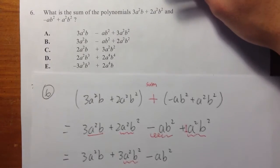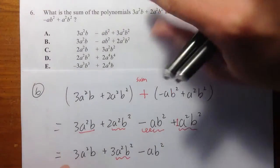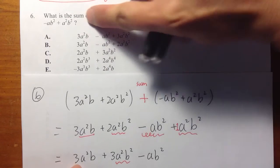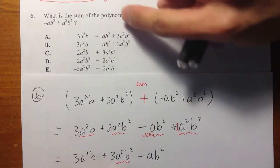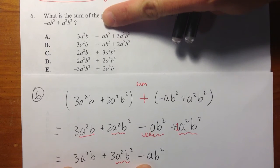And let me just take a look of the answer choices to see which one they have. So I have the 3a²b, and I want to put plus 3a²b², and then minus the ab².